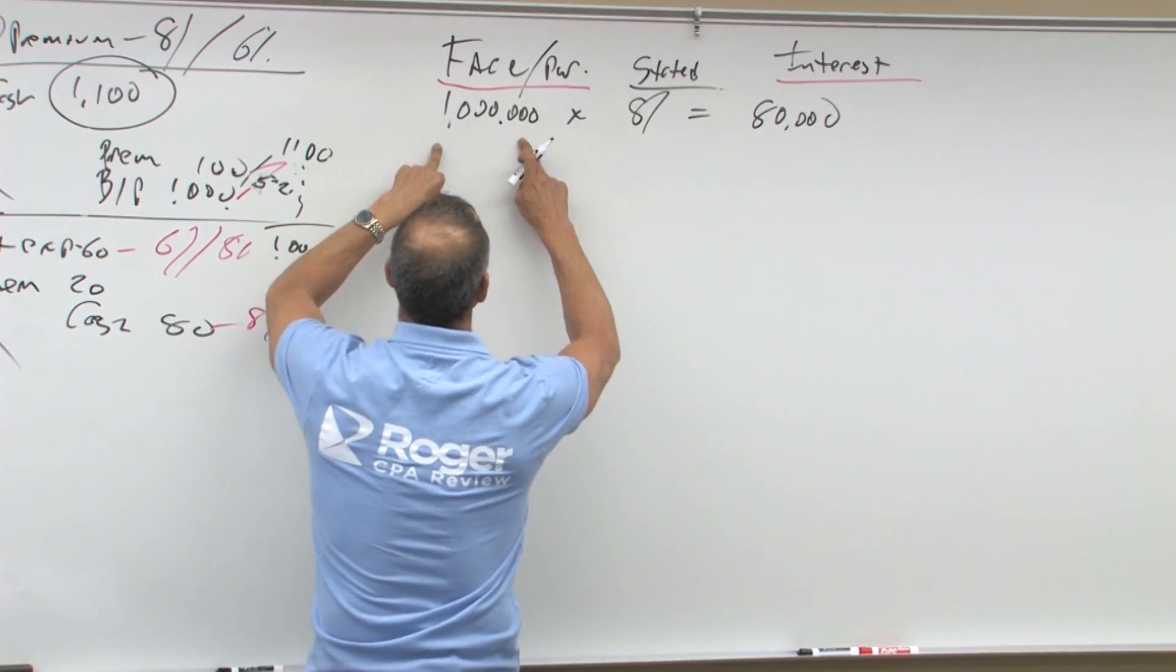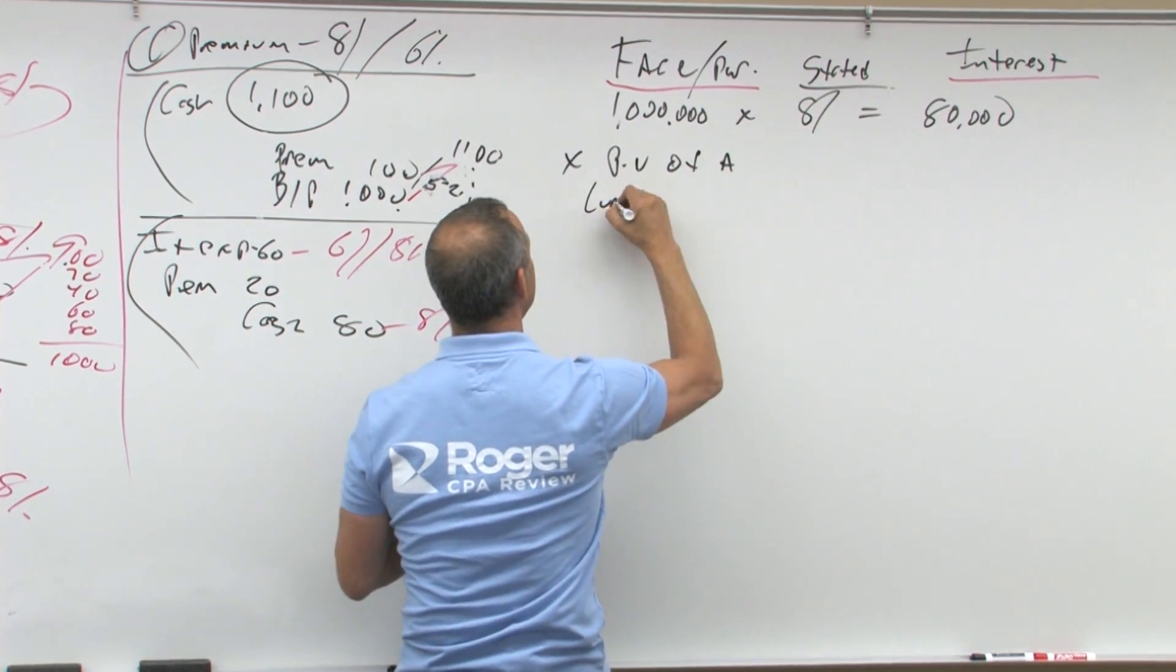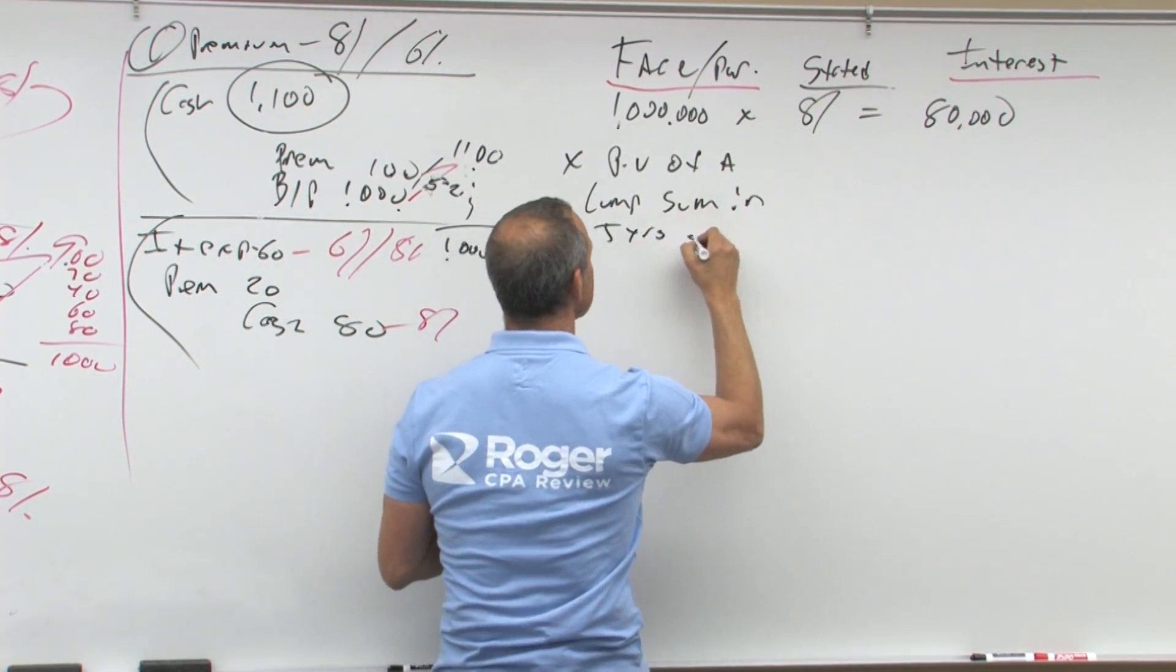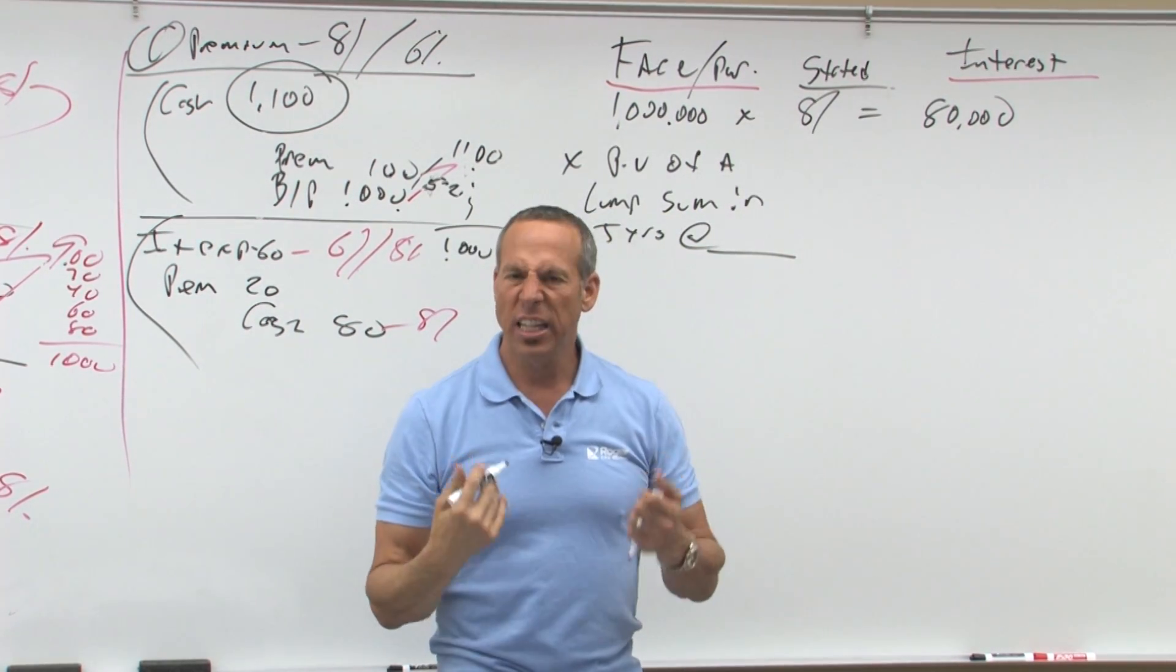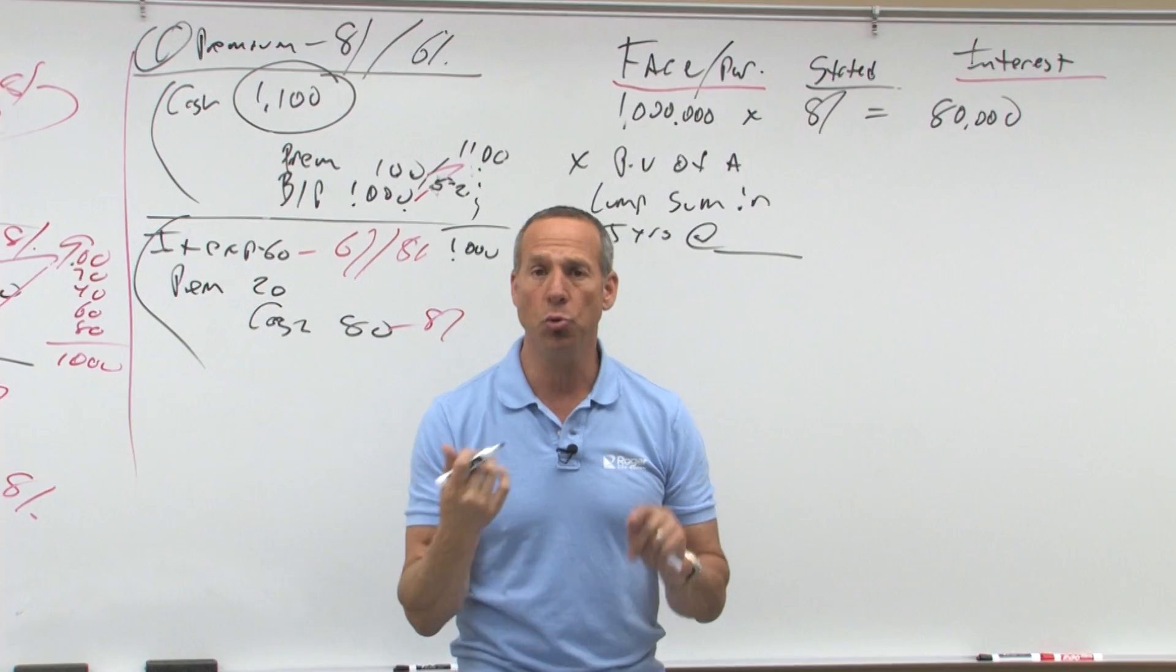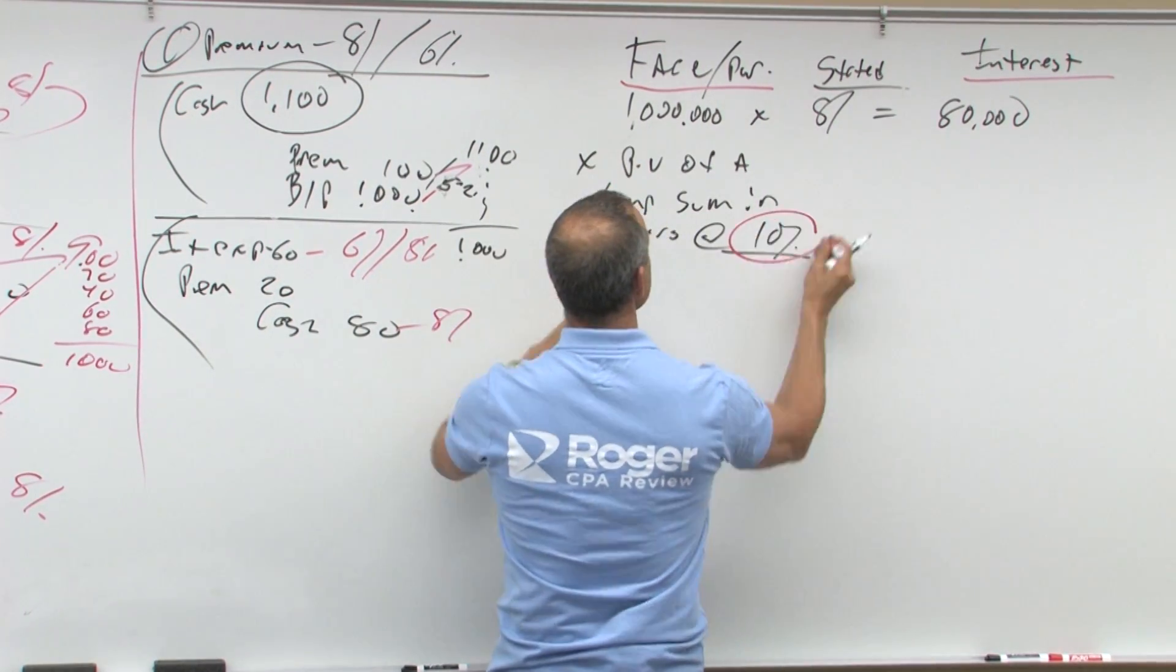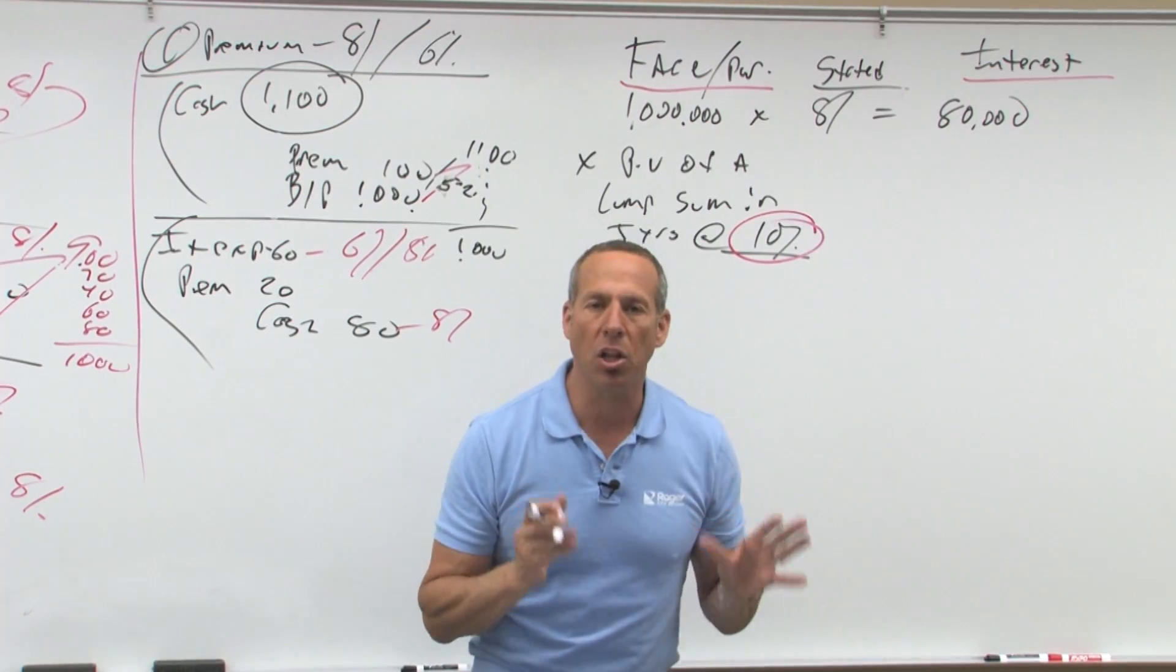So we're going to take the million dollars times the present value of a lump sum in five years at what percent? What percent do you want to earn? Let's assume it's the discount, example two. We want to earn 10 percent. So notice you use the effective rate to present value the lump sum.